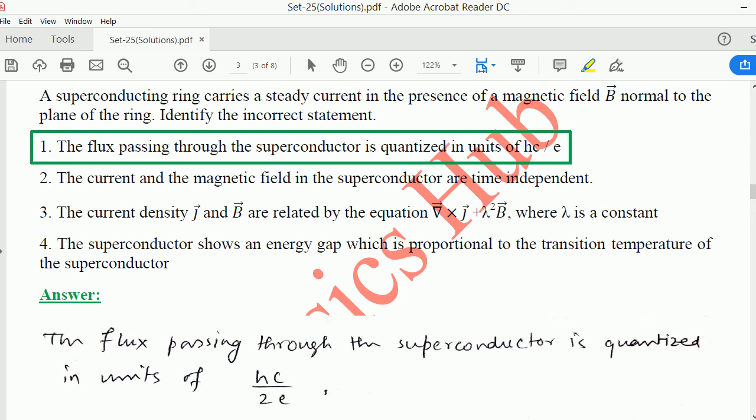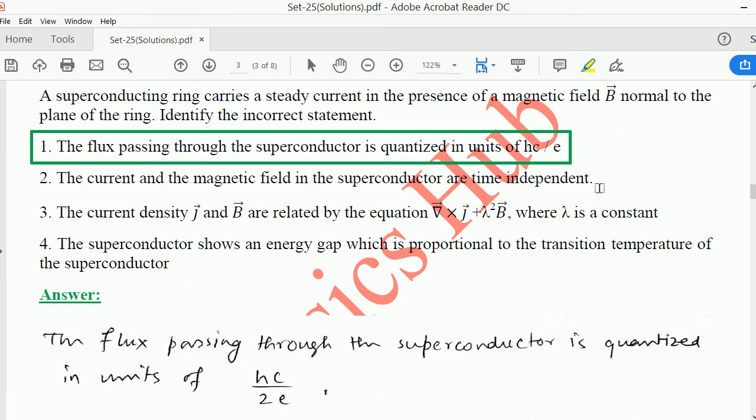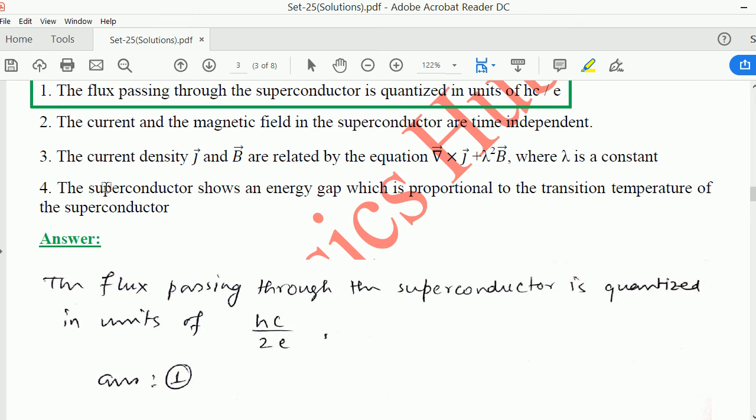So this should be the answer. For your enhancement of knowledge, you should remember the other three points also because those three points are correct. The current and magnetic field in the superconductor are time independent. The current density J and B are related by the equation J plus lambda squared B equals 0, where lambda is a constant. The superconductor shows an energy gap which is proportional to the transition temperature: EG equals 7/2 times kB times Tc, where Tc is the critical temperature.